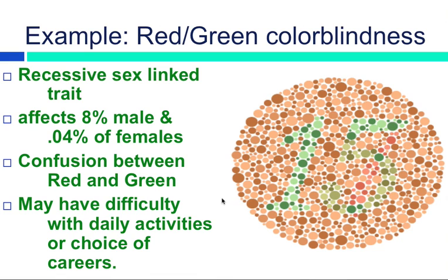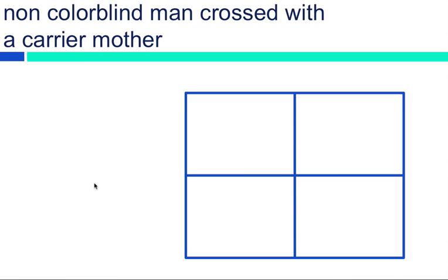An example would be color blindness. If you're watching this and you can see a number in the center of this circle, then you are not colorblind. If you cannot see that number, then you are colorblind. It's a recessive trait, so colorblindness is a little c. It affects 8% of males, and it's very rare, but it does occur in females. And it's a confusion between red and green. People with colorblindness may have difficulty in their daily lives and their choice of career, but for the most part, they can live normal, healthy lives.